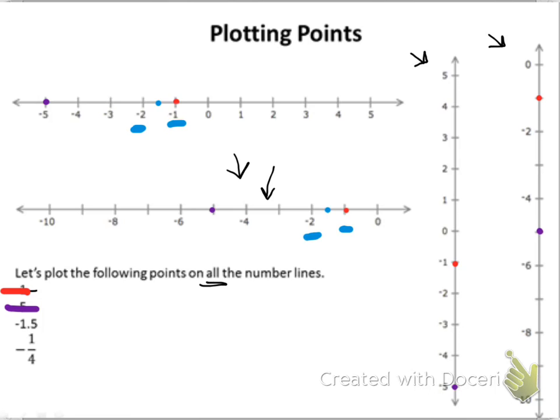On my third number line, here's my negative 1, here's my negative 2, so negative 1 and 5 tenths must be halfway between the two of them. And on my last number line, I know negative 1 is right there and negative 2 is here, so it has to be halfway between the two of them — right there.